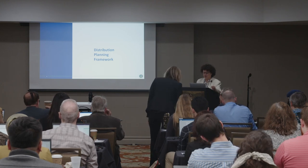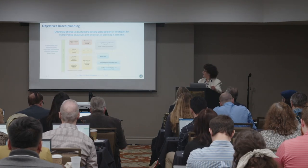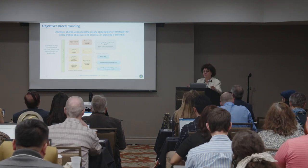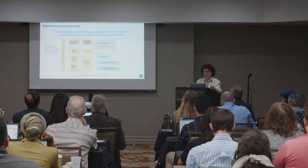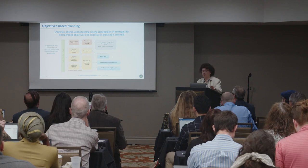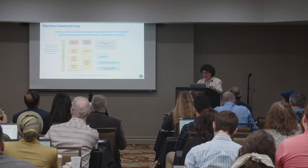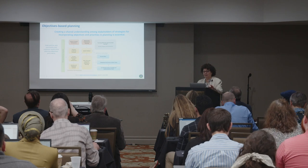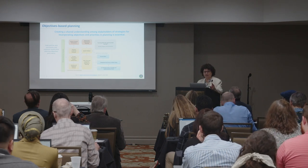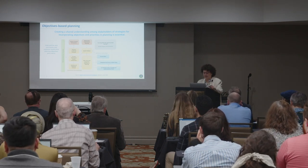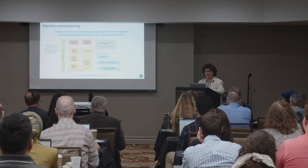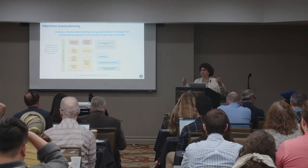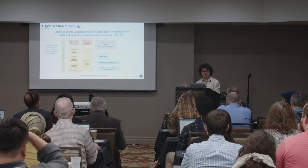Now I'm going to lay out our distribution planning framework. Many of you may have seen this — it's from the US Department of Energy Modern Distribution Grid Series, a really helpful series of guides for states and utilities. The first step is planning objectives — and again, I mean state objectives. It's good that the utility has its own objectives, but what are they doing to meet the multiple objectives of the state as codified in law, public utility commission guidance, and executive orders?